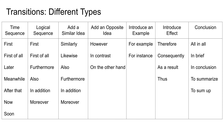Moving forward, here's a table of different types of transitions. Time sequence transitions — like 'first of all, second, third, later, meanwhile' — are used when telling a story to sequence actions. Logical sequence transitions include 'furthermore, also, in addition.' To add a similar idea: 'similarly, likewise, moreover.' For an opposing idea: 'however, in contrast, on the other hand.' To introduce an example: 'for example, for instance.' To introduce an effect: 'therefore, as a result, thus.' And to introduce a conclusion: 'all in all, in brief, in conclusion, to summarize.'